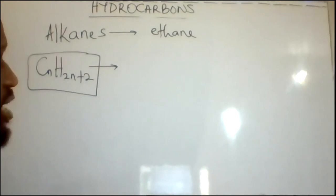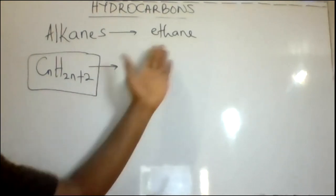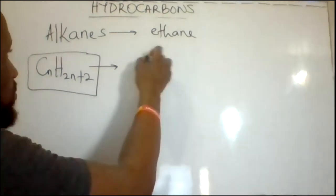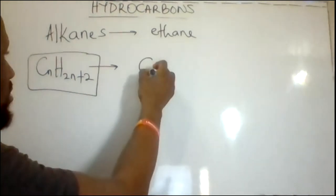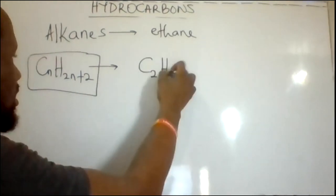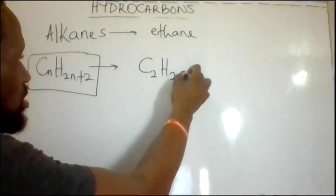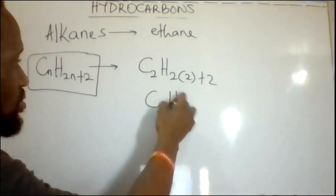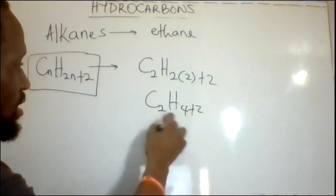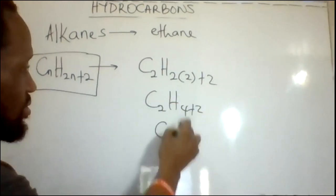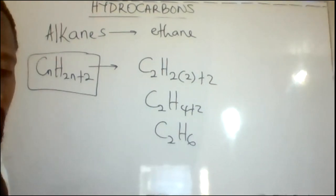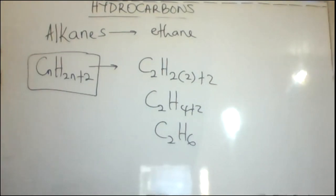The second member of this series is ethane. Applying the same formula: C2H(2×2+2) = C2H6. Ethane has the molecular formula C2H6, being the second member of the alkane series.